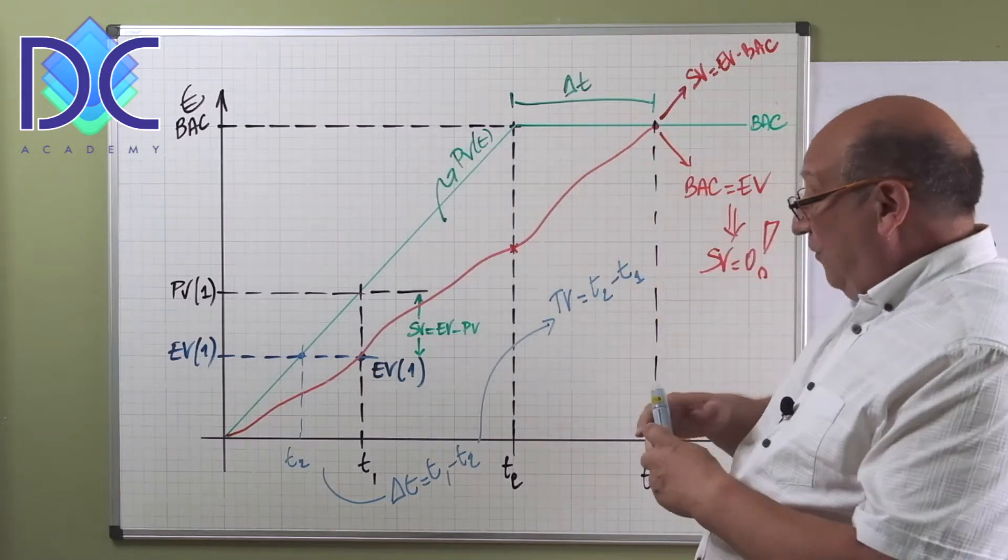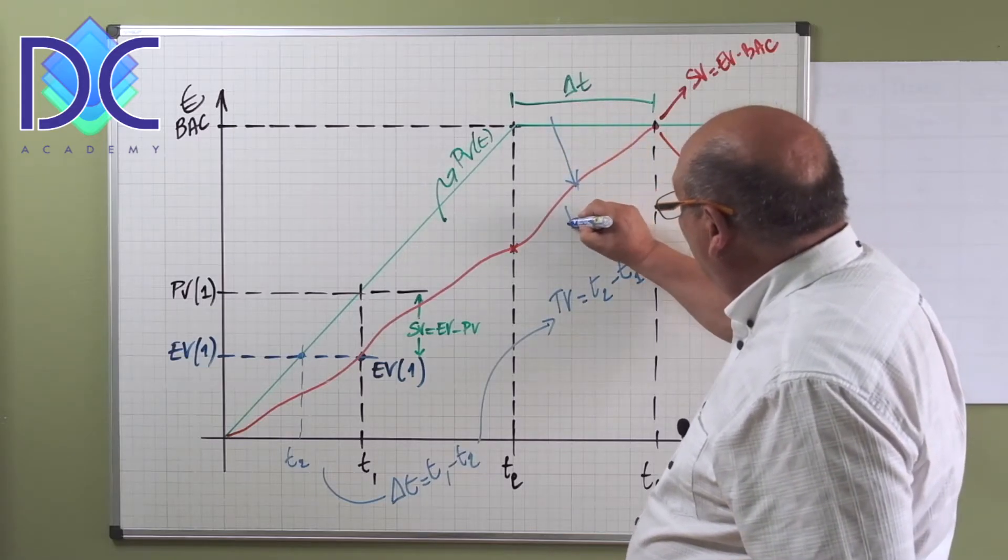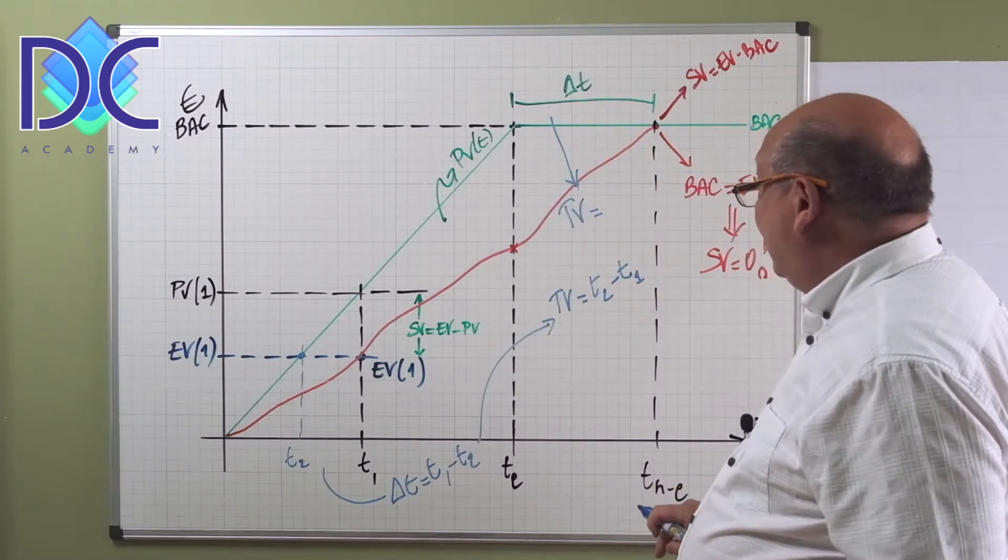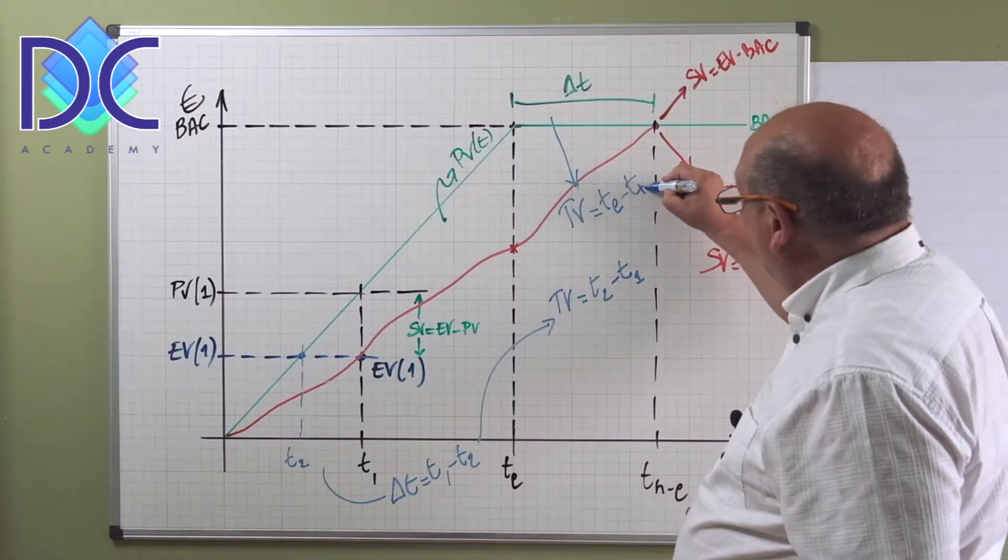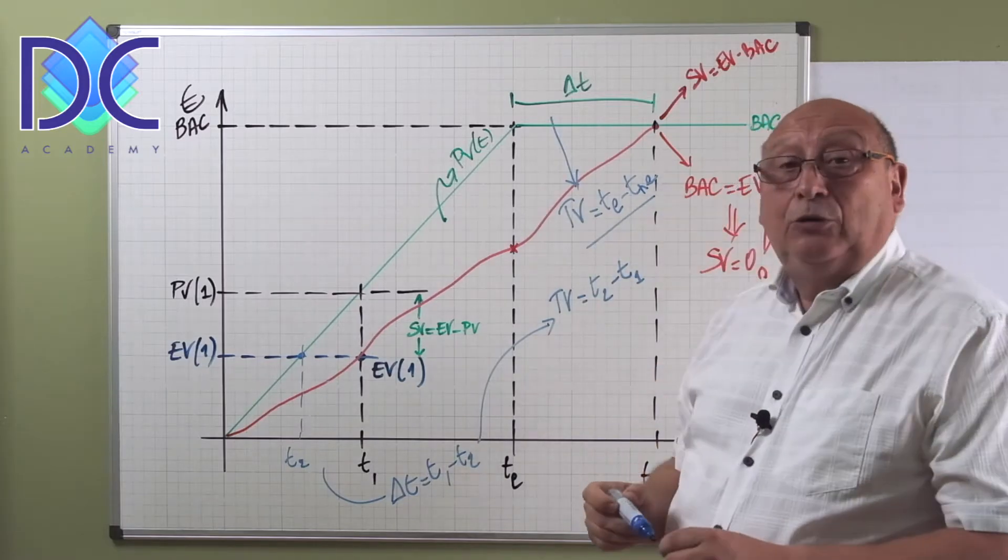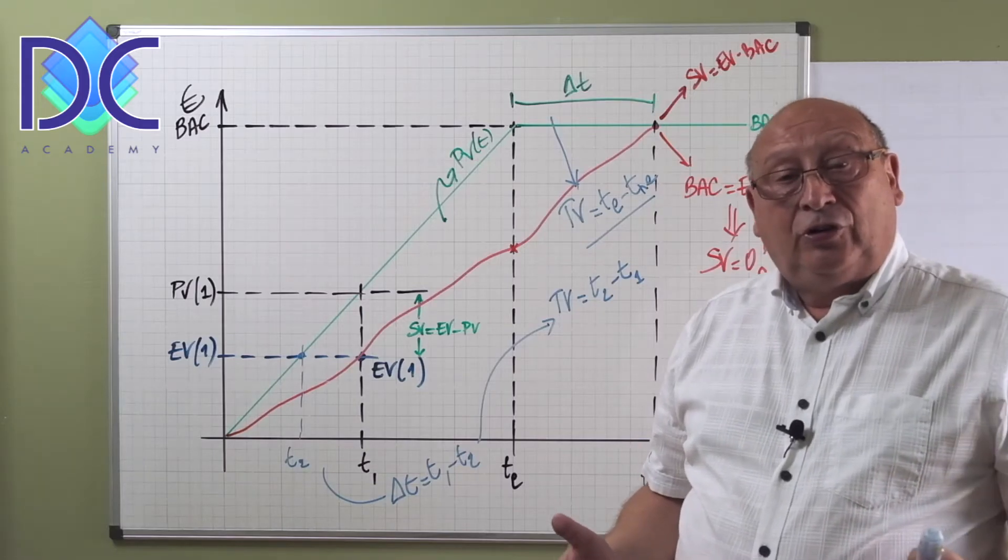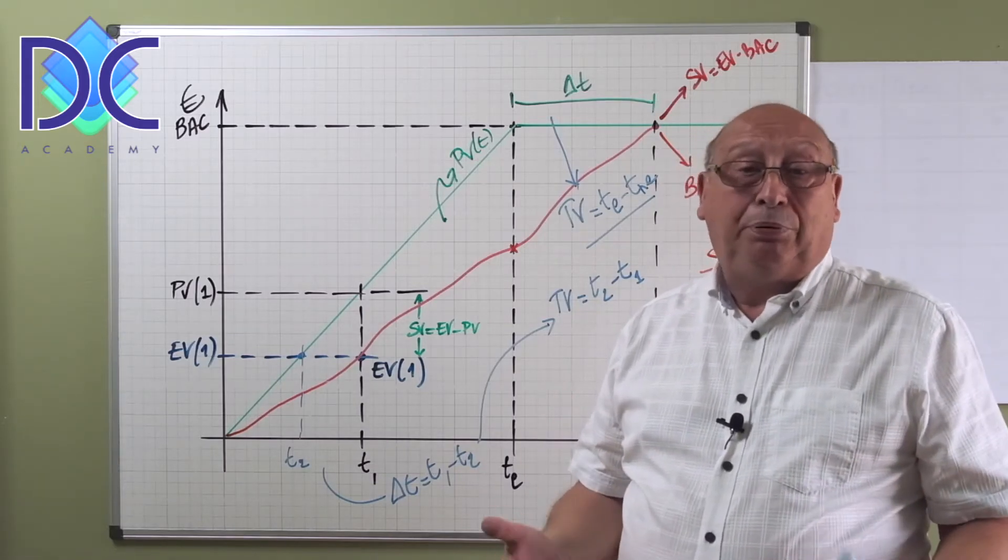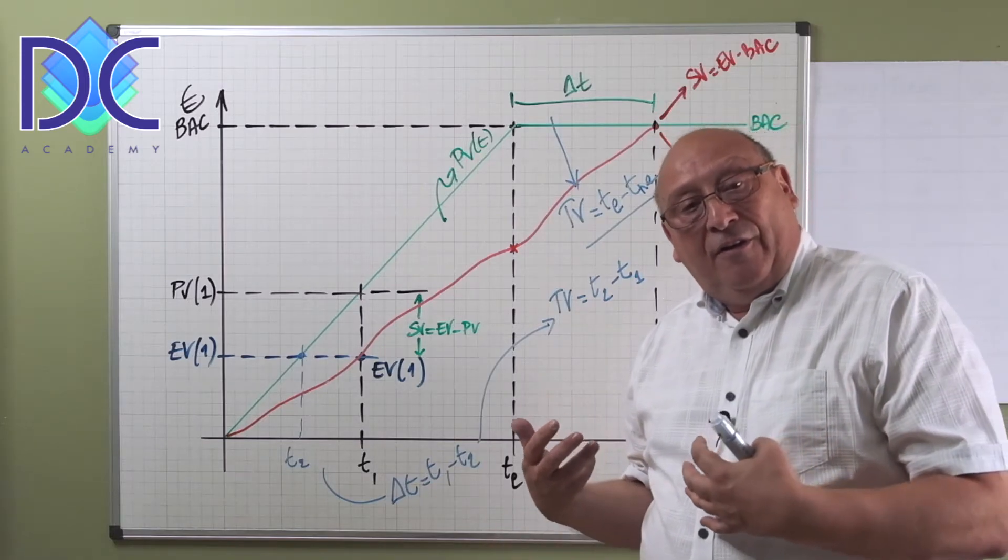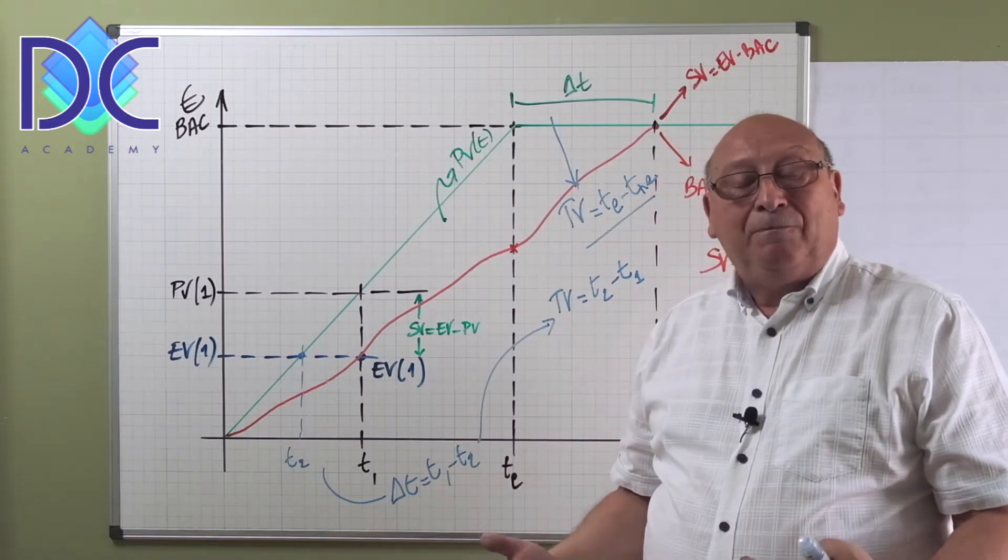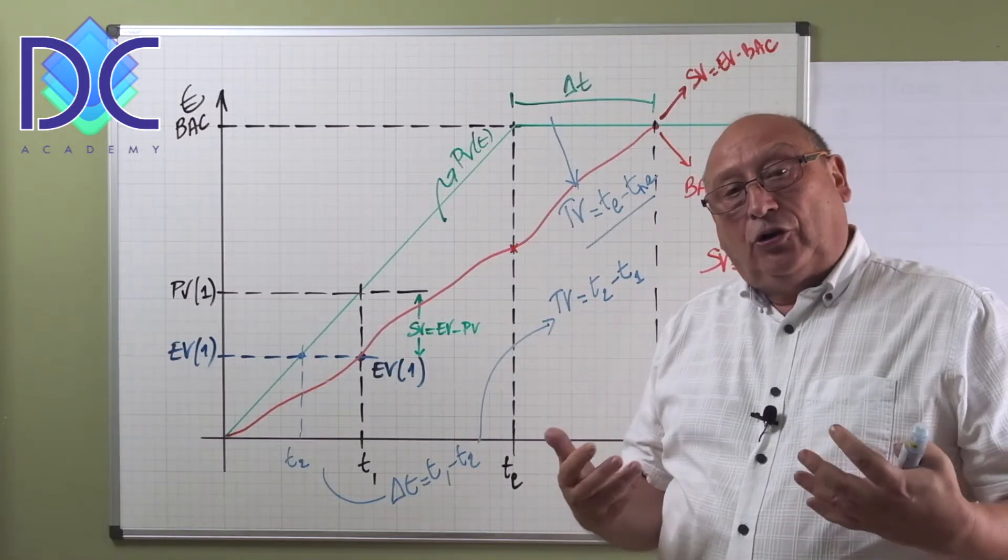And when we continue, we see that that time difference keeps on growing, and we find that the time variance is basically t the new end minus t new end, which is not equal to zero anymore. So basically this method shows us a more realistic approach on how to use the earned value.